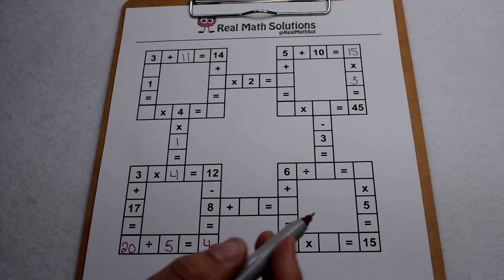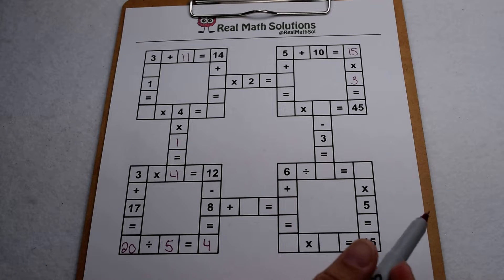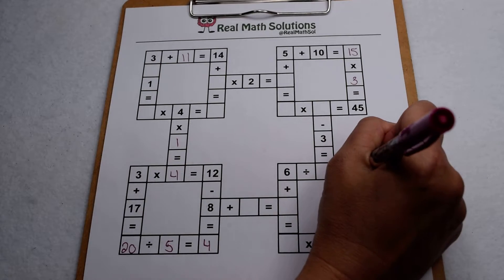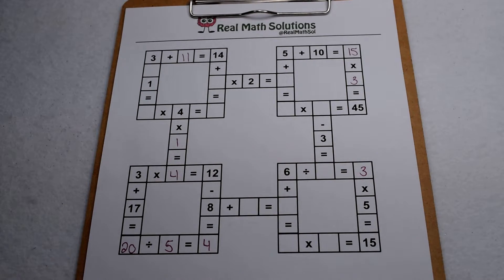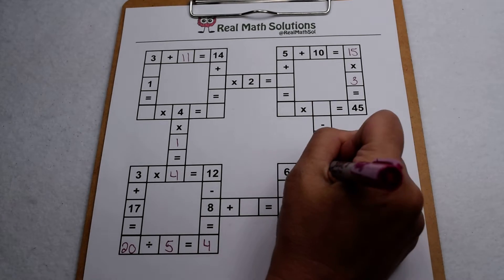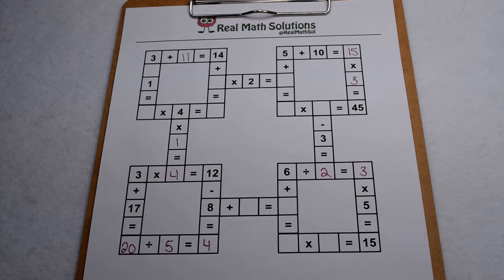So this square is done so let's go over here and see what we can do on this one. Our best starting point is here, something times 5 gives me 15. Well I know 3 times 5 gives me 15 and now I can fill in this part going across. 6 divided by something is going to give me 3 so that something is 2.